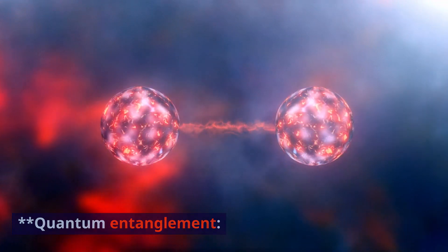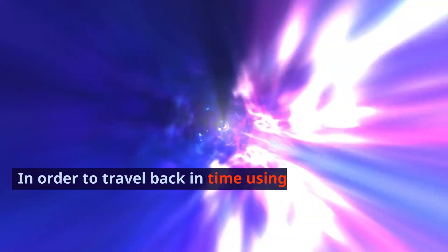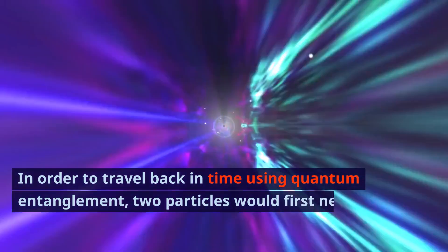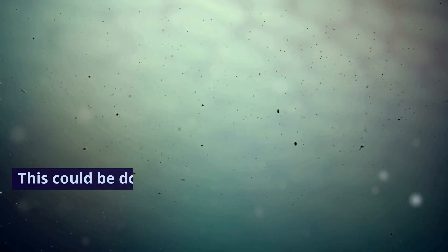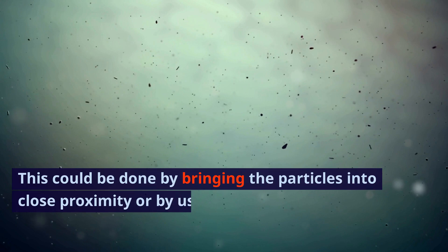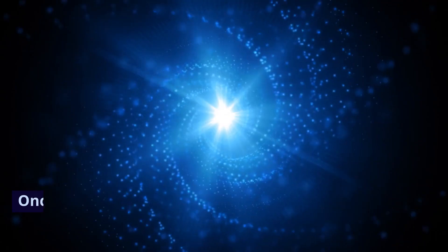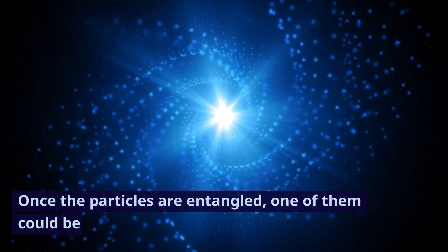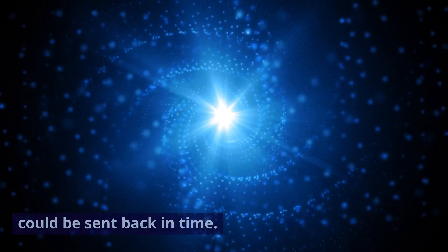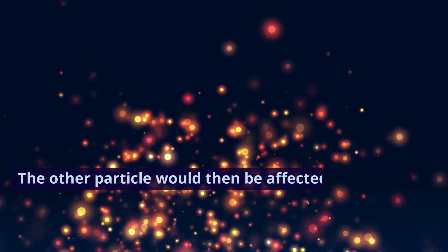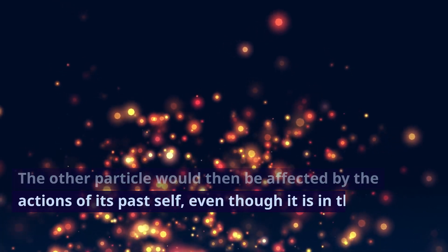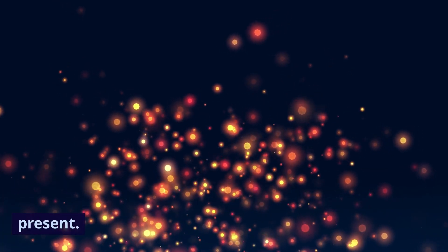Quantum entanglement. In order to travel back in time using quantum entanglement, two particles would first need to be entangled. This could be done by bringing the particles into close proximity or by using a quantum computer to create the entanglement. Once the particles are entangled, one of them could be sent back in time. The other particle would then be affected by the actions of its past self, even though it is in the present.